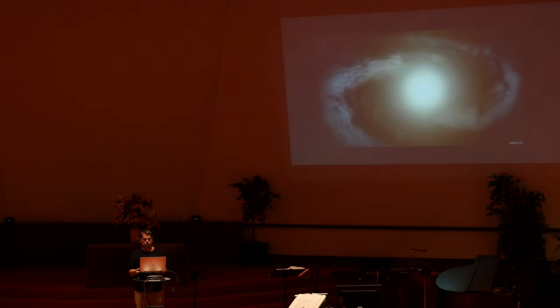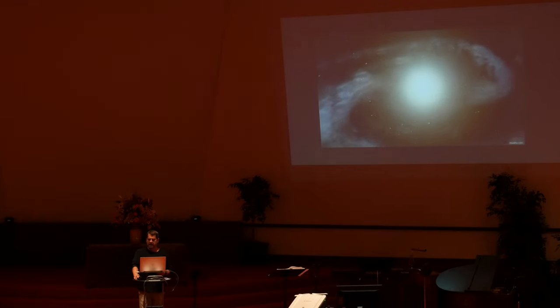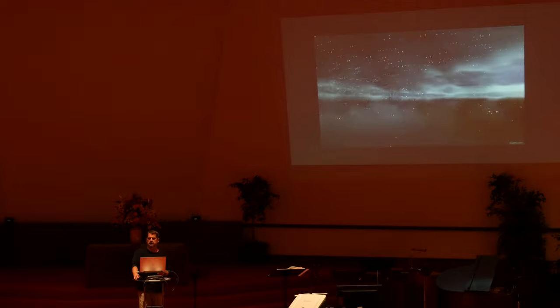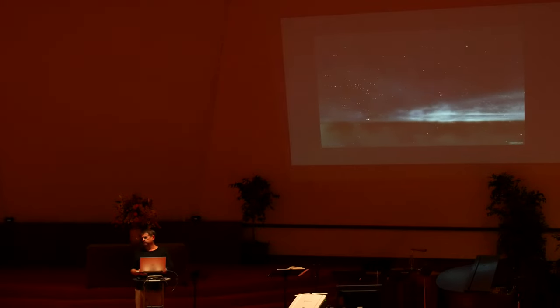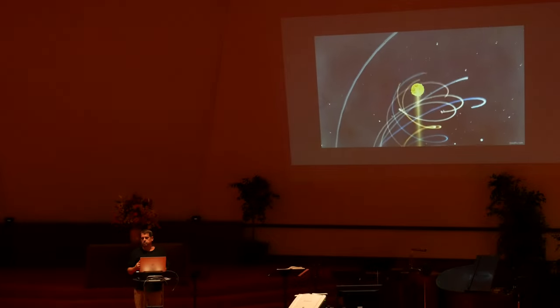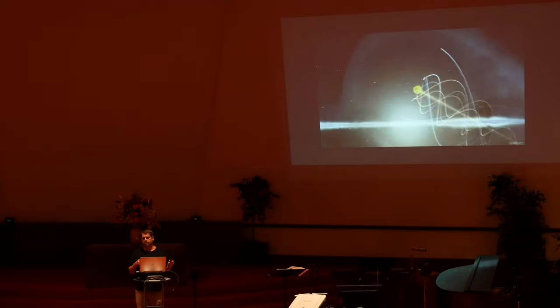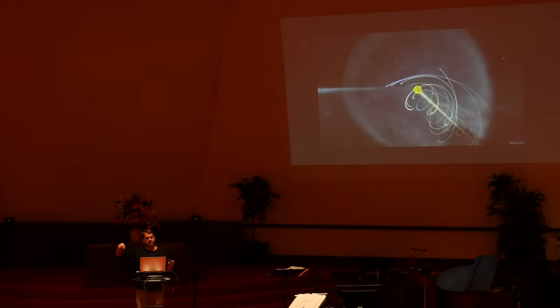Martin Harwitz says in Astrophysical Concepts: 'Once planetesimals have been formed, further growth of planets may occur through gravitational accretion into larger bodies, but just how that takes place is not understood.' Furthermore, the nebula theory's movement model was based on previous models of our solar system. However, we now know that the solar system is traveling around the galaxy at an average speed of about 500,000 miles per hour — 143 miles per second.